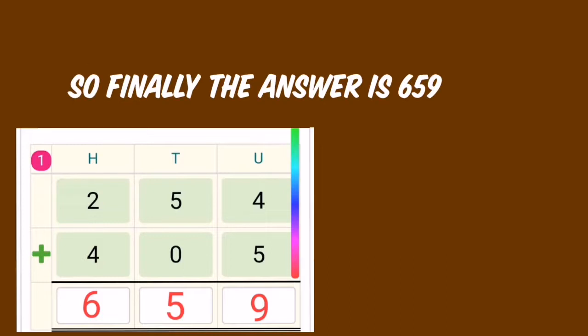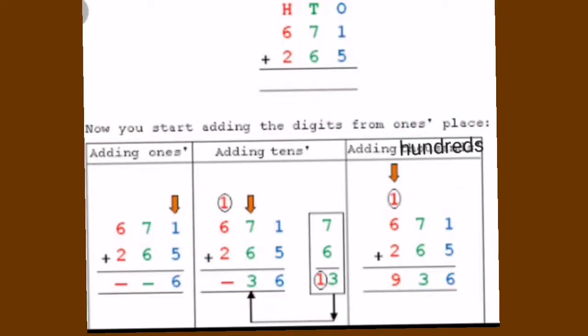So finally the answer is 659. 254 plus 405 is 659. Next topic is addition with carrying. In addition with carrying, we follow the same procedure — adding from ones, then going to tens, then hundreds, and if it is a four-digit number, then going to thousands.